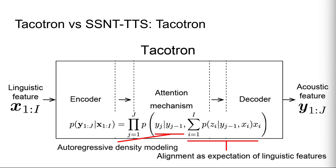One of the most popular TTS methods in the Sequence-to-Sequence framework is Tacotron. Tacotron consists of an encoder and decoder. The encoder encodes linguistic features into a linguistic representation. The decoder decodes that representation in an autoregressive way. Alignment between input linguistic features and output acoustic features is estimated by a soft attention mechanism, which does not model alignment explicitly — it models alignment as the expectation of linguistic features.